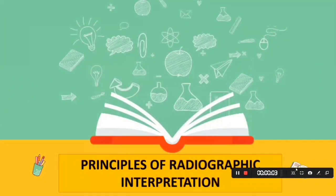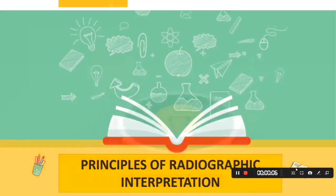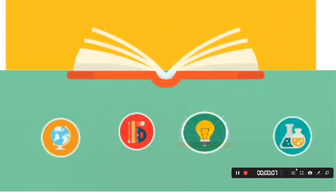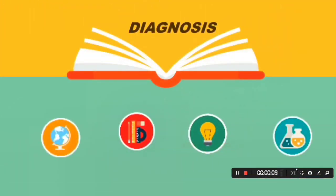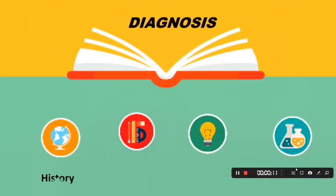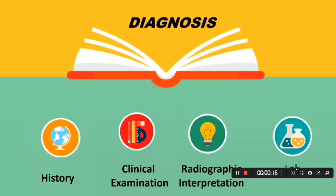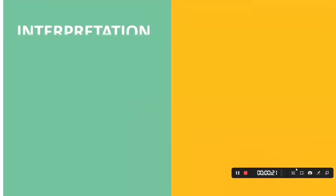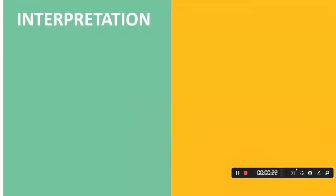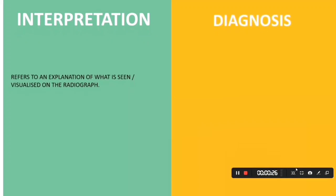Principles of radiographic interpretation and diagnosis: a proper diagnosis can be achieved through detailed history, good clinical examination, correct radiographic interpretation, and lab histopathology. Interpretation refers to an explanation of what is seen and visualized on the radiograph.